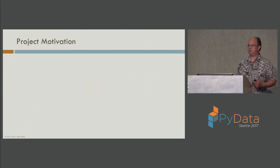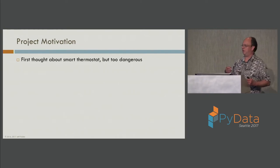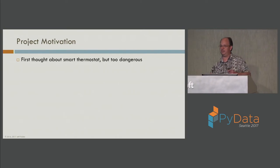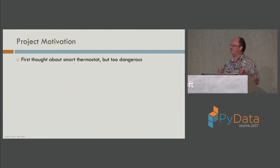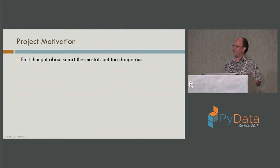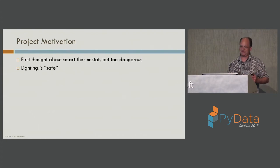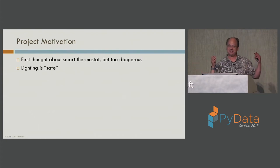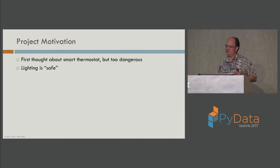The motivation for the project: I first thought about doing a smart thermostat and controlling my air conditioner and heater, but then I thought maybe that's too dangerous for a first IoT project — I didn't want a major repair bill or to deal with high voltages. So I thought lighting is safe — I can't really hurt anyone with lighting.